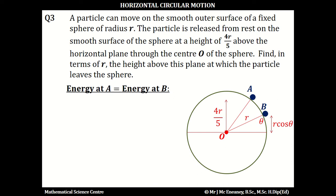At A it has potential energy only. At B it has both potential and kinetic energy. So Mg times 4R over 5 equals Mg times R cos theta plus one half Mv squared.